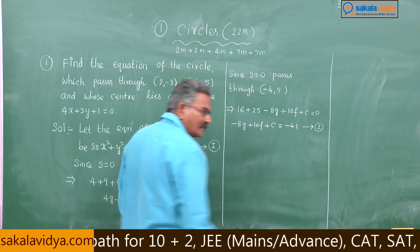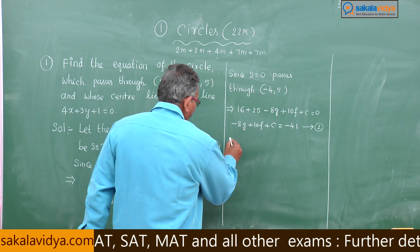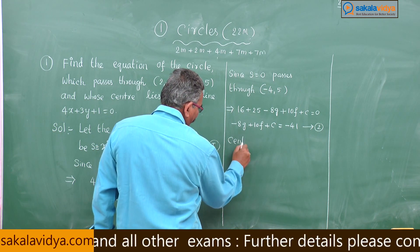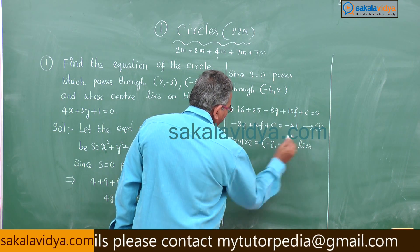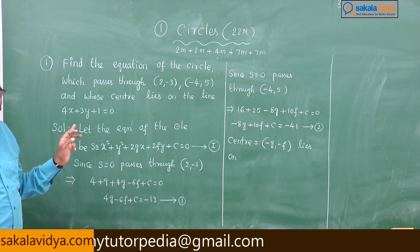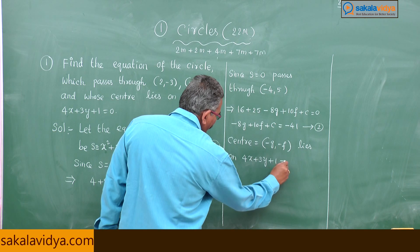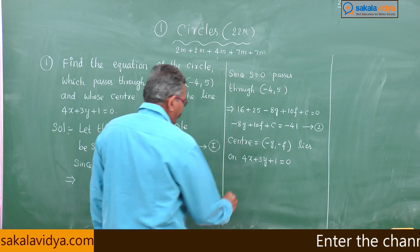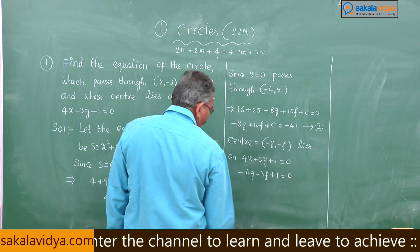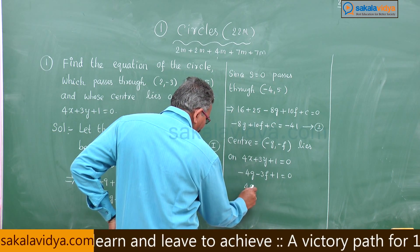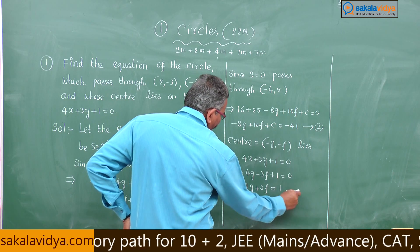The center lies on 4x + 3y + 1 = 0. Since the center is (-g, -f), substituting gives -4g - 3f + 1 = 0, which can be rewritten as 4g + 3f = 1. Call this equation 3.